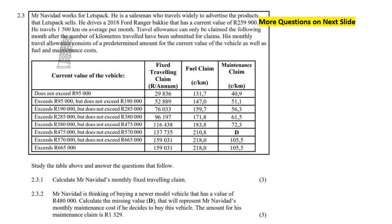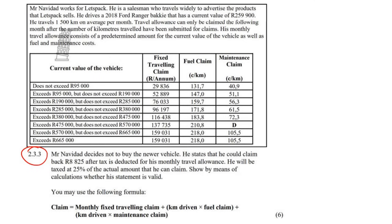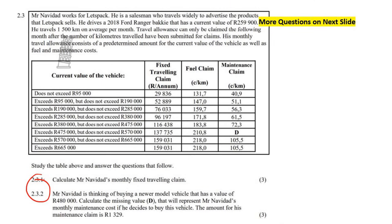With this question there will be more on the next slide. So here we've got two questions and one over here — a nice six-marker coming up. Mr. Navidad works for Let's Pack; he is a salesman who travels widely to advertise the product. He drives a Ford Ranger with a current value listed, travels a certain distance per month, and travel allowance can only be claimed the following month after the kilometers traveled have been submitted. His monthly travel allowance consists of a predetermined amount for the current value of the vehicle as well as fuel and maintenance costs. Study the table and answer the questions.